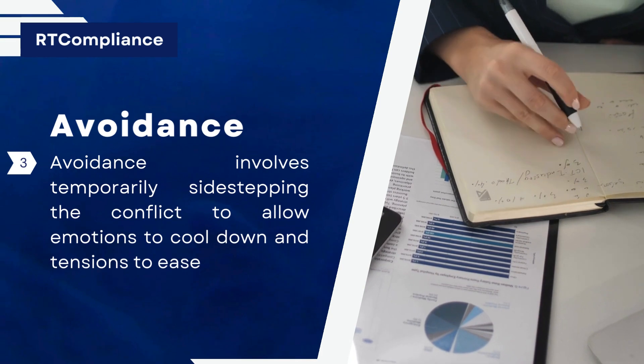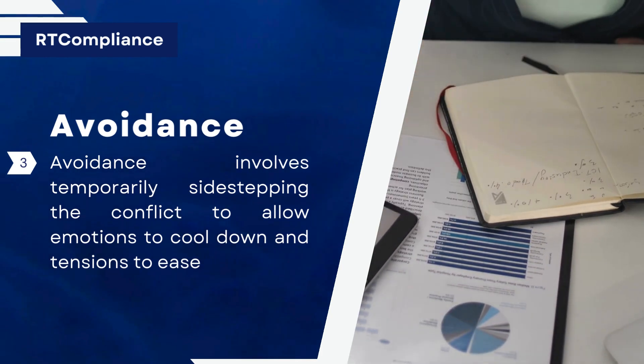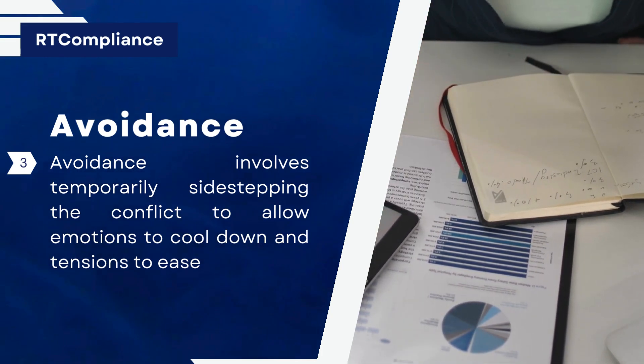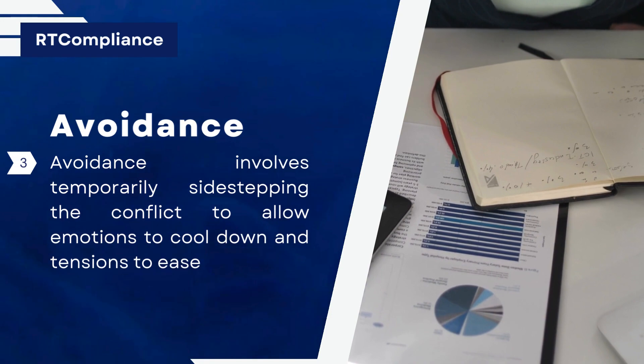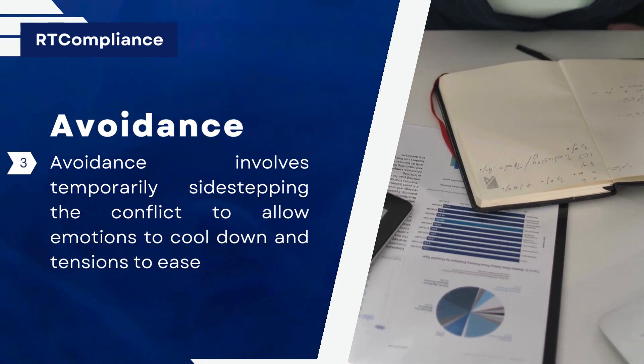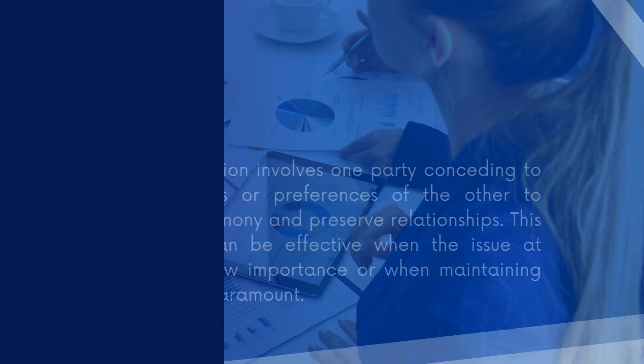Strategy 3: Avoidance. Avoidance involves temporarily sidestepping the conflict to allow emotions to cool down and tensions to ease.